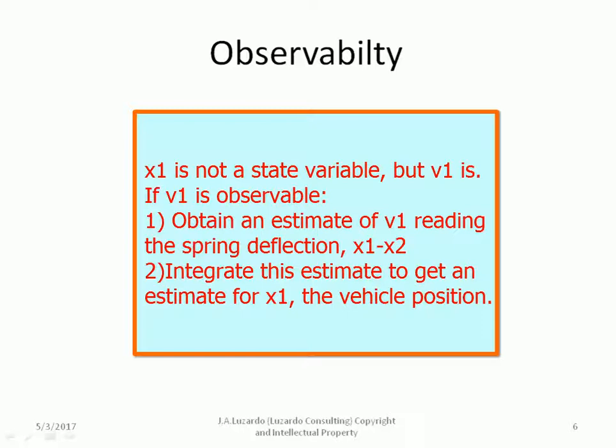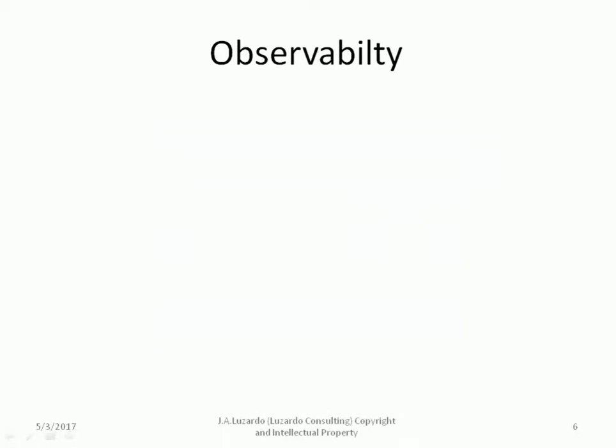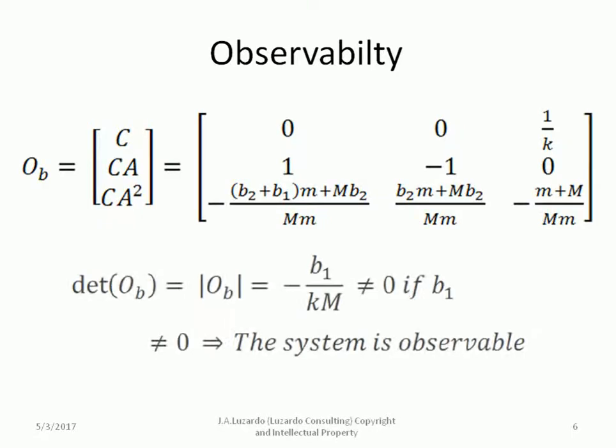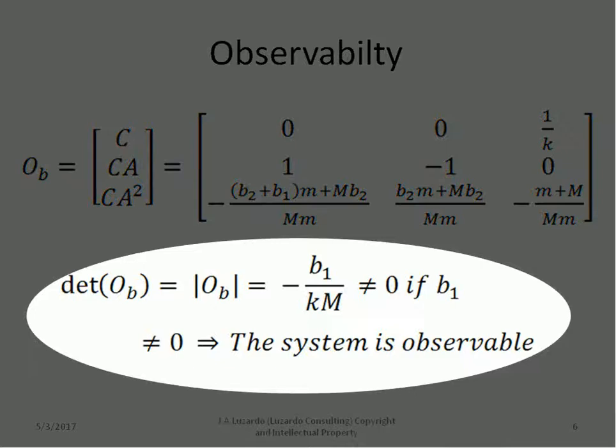If V1 is observable, we can obtain an estimate of V1 reading the spring deflection, x1 minus x2. Then, integrate this estimate to get an estimate for x1, the vehicle position. The observability is determined by the rank of the observability matrix. The observability matrix is calculated using A and C as follows. If the rank of the observability matrix is 3, then the system is observable. In other words if the determinant of OB is different from 0, the system is observable. If b1 is not equal to 0, which is the typical case since we can always count on dissipation and friction, the system is fully observable, in other words we can estimate V1 from measuring the spring deflection.